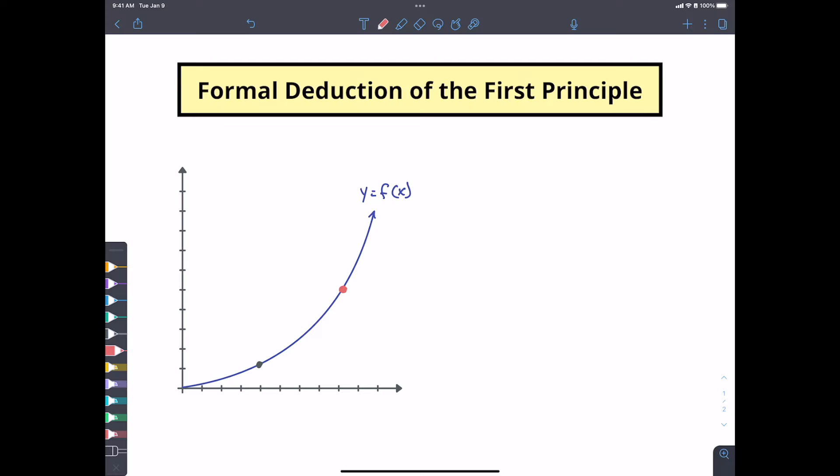What happens is we've got some value x and f of x, that's our y value. And what we need to do is we need to get this distance from here to here, this distance in our x's. We want to get this thing really close.